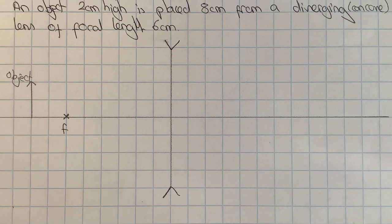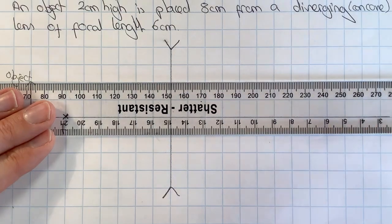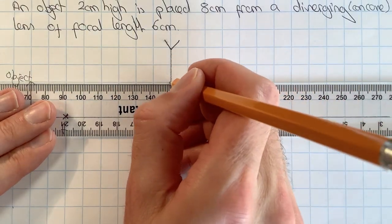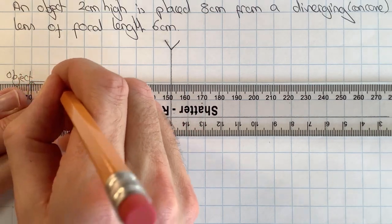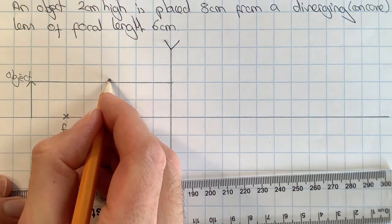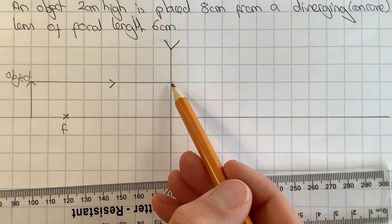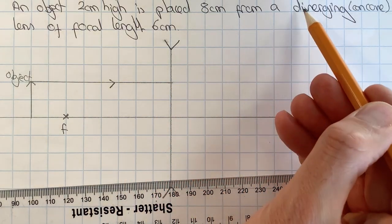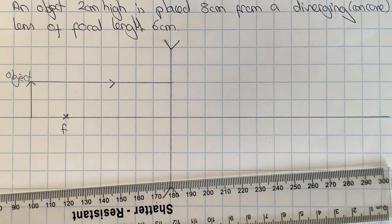I'm now going to draw in my two special rays that help me to see where the image forms for this lens. The first one is going to be parallel to the principal axis until it hits the lens. Because this is a diverging or concave lens, the ray afterwards is going to head off this way but it goes in the direction as if it came from the focus.